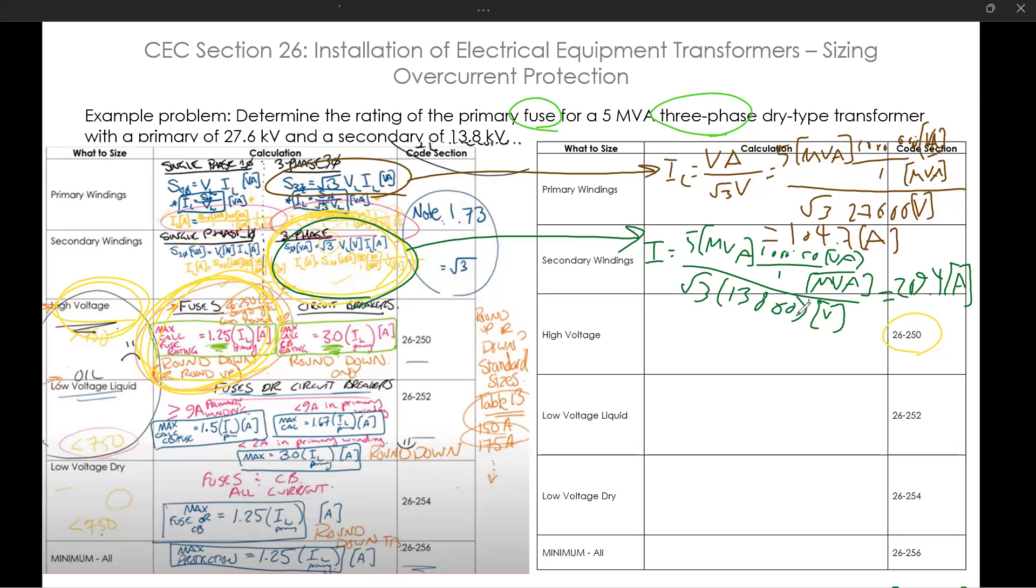But this question is just asking to determine the rating of the primary fuse. So I'm using a fuse, which fuses actually have this section, subsection two. Subsection two actually says that you can round up, but normally we would round down. We'll talk about that once we calculate it. So for fuse, we use this equation.